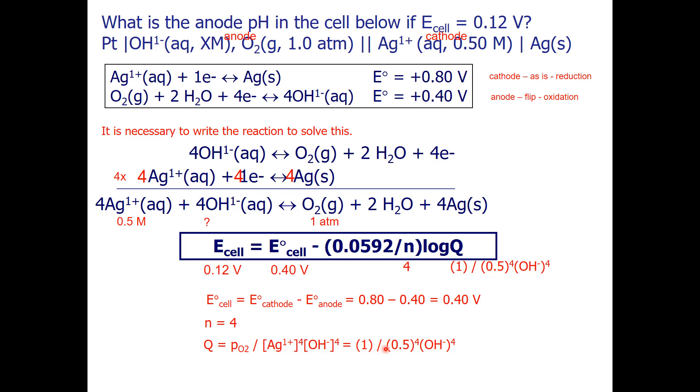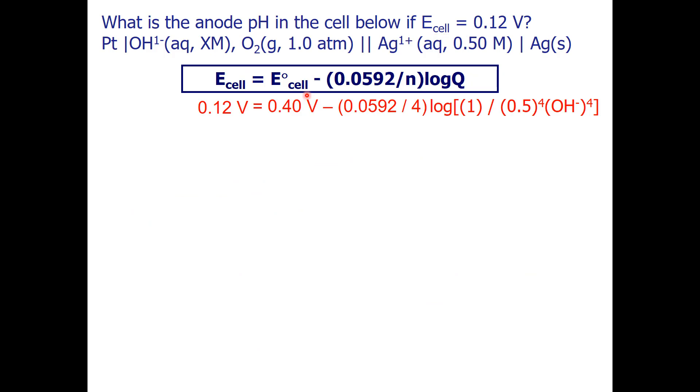Filling in the information I know, this is my Q expression, and I need to solve for my hydroxide concentration. Here is the equation I need to solve. First, I'm going to move my 0.40 over to this side, so I will have -0.28 equals -0.0592 divided by 4 log of my Q expression.